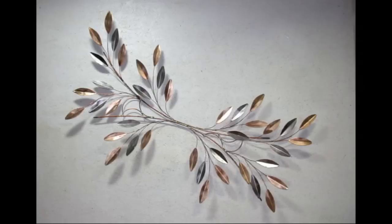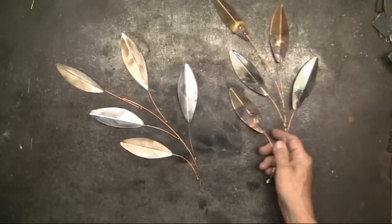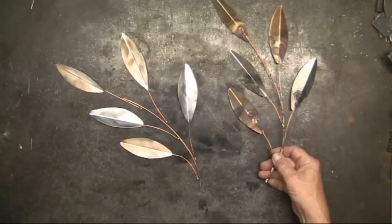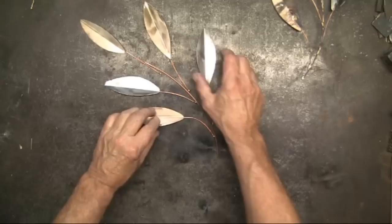For balance, I want 4 of these sections to go to the right, and 4 to go to the left. This one is going to the right, and I want the other one to go to the left. What I want is a mirror image. So I'll turn it upside down, and that will be my guide for making the branch that goes to the left. Now that I know how I want to position the leaves, I can go ahead and braze these together.